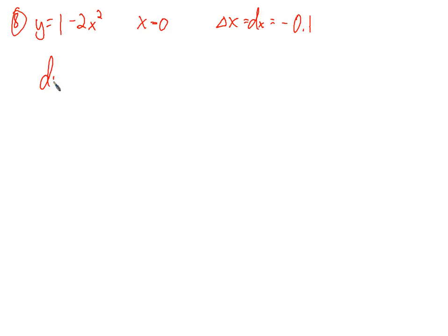So dy is just f prime of x times dx. There's an expression in the book that uses x, and that's the same thing. So dy, which we're trying to find, is f prime of x. Well, f prime or y prime is negative 4x. And x is 0 times delta x, which is negative 0.1. And we take negative 4 times 0 times negative 0.1, and we have a dy of 0.